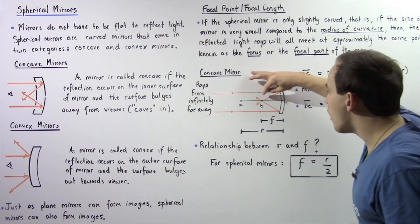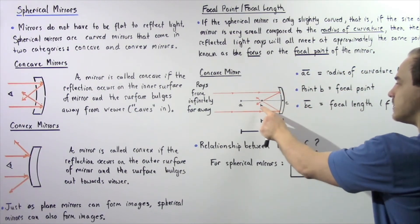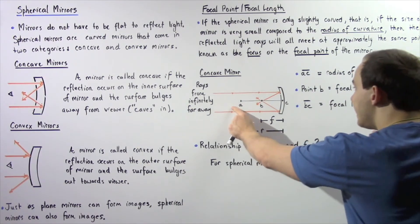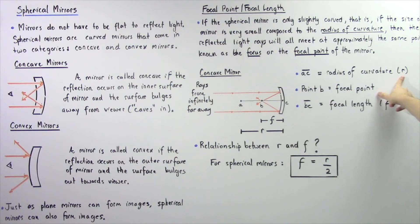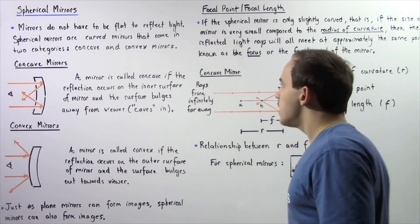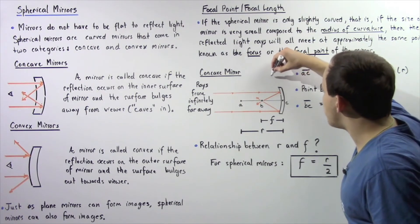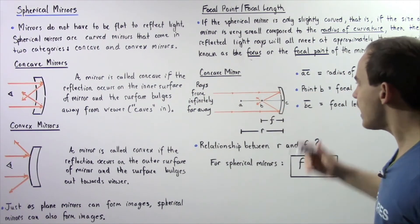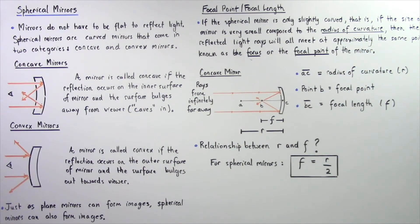The distance from the focal point to the center of our mirror — the distance BC — is known as the focal length, given by lowercase f. The distance from point A to point C is known as the radius of curvature, given by R. The radius of curvature refers to the radius of the circle that would be formed if we extended the curve of the mirror into a full circle.